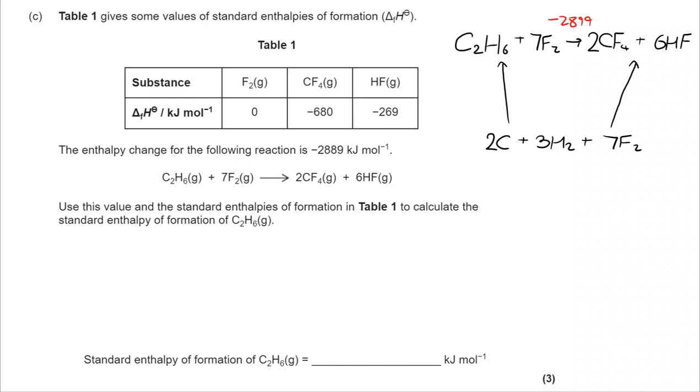Now I can start to substitute some of the figures in. For the C₂H₆, that's what we're calculating—enthalpy of formation—so I've given that the value X. My formation of 7F₂ will have an enthalpy of formation of zero. We're told that in the table, but of course it's zero because it's being formed from itself. There is no change by definition.